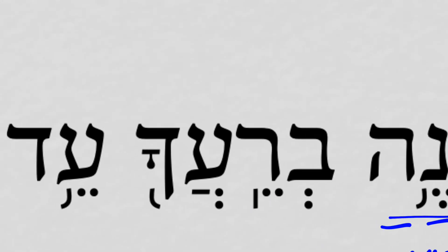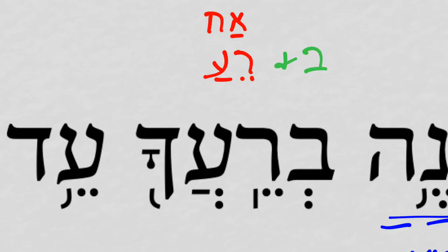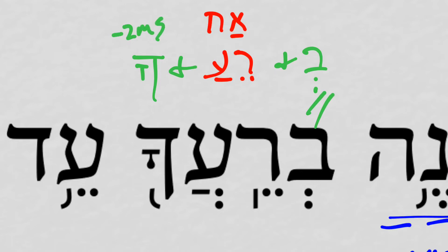V're'cha comes from the word re'ach, meaning friend or neighbor or the like, usually used almost exactly in counterpart with ach, meaning brother. We'll notice in this case that there is attached to the beginning the preposition b', and in this case it has the sense of against — to answer against. And then at the end of the word there's the cha, the 2nd masculine singular pronominal suffix, namely your neighbor.